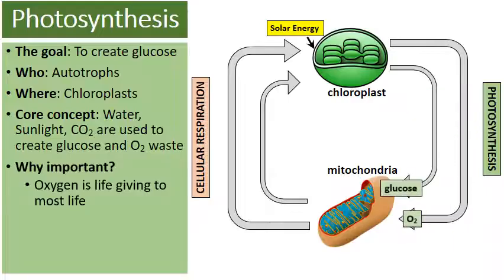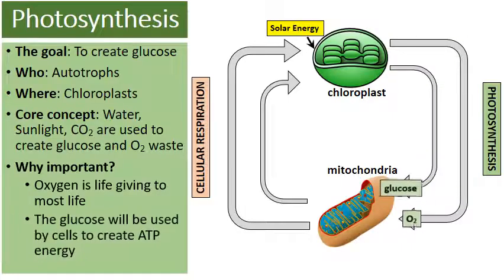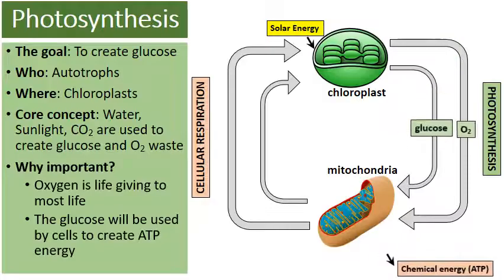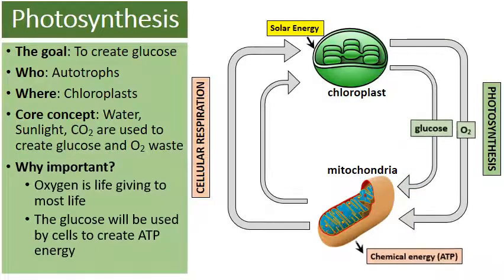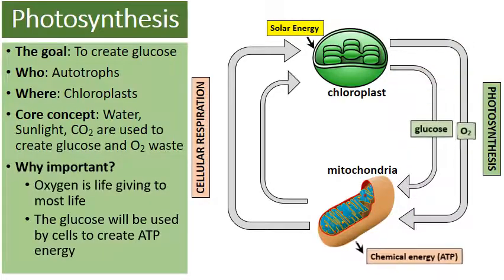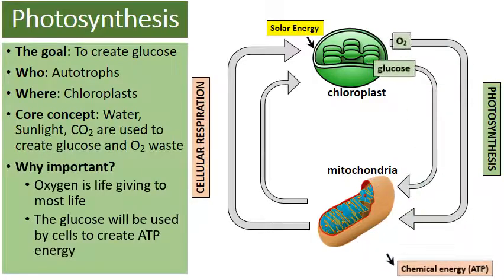Why is photosynthesis important? Number one, oxygen is life-giving to a lot of organisms on Earth. But also, the glucose produced as a result of photosynthesis will be transferred to the mitochondria. The mitochondria will use the glucose and the oxygen during cellular respiration in order to make ATP — adenosine triphosphate — which we'll talk more about when we go into cellular respiration.